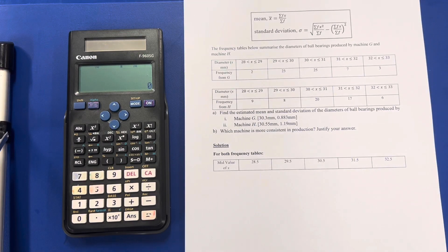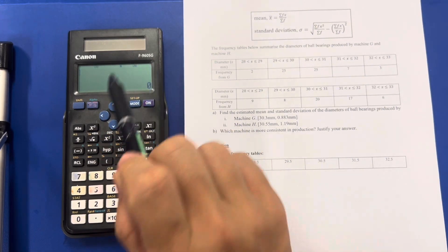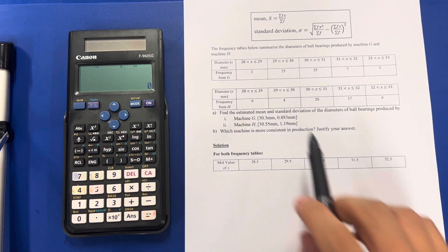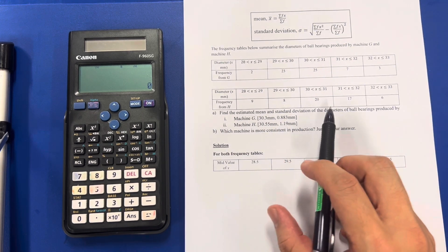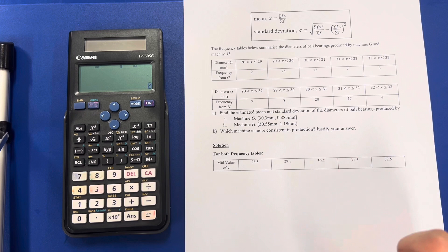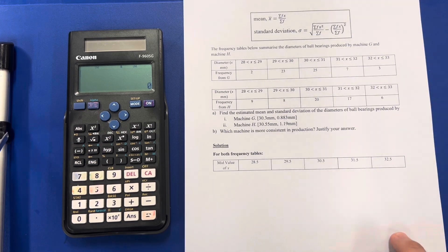Hello everyone, welcome to this video where we are going to use the calculator Canon F960SG to help us find the estimated mean and standard deviation of the diameters of ball bearings that is being produced by two machines. This is given in group data.